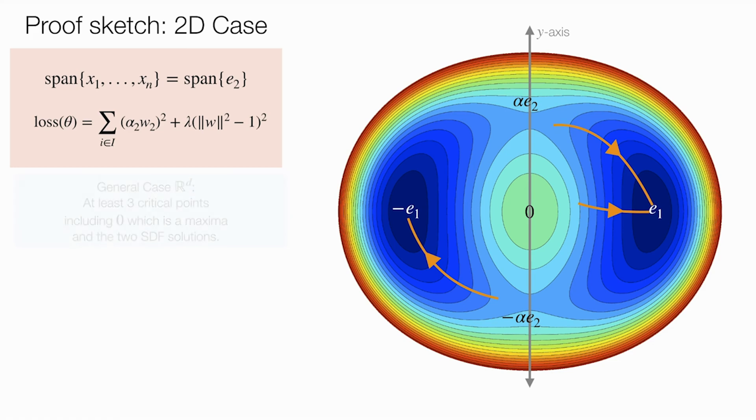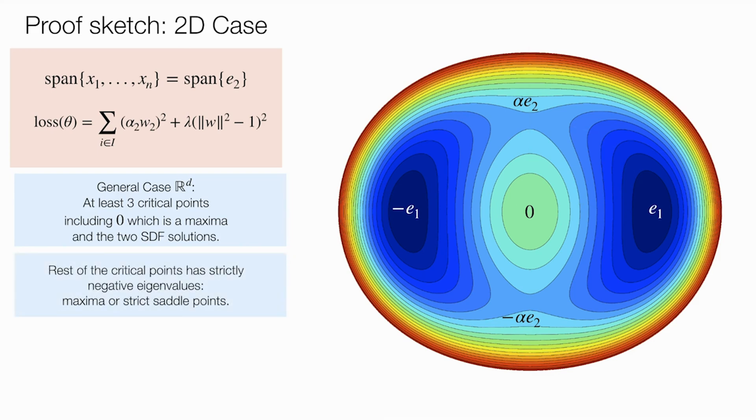For the general case, we show that there are at least three critical points, including zero, which is the maxima, and two SDF solutions. We show the rest of the critical points have strictly negative eigenvalue, those are either maximas or strict saddle points. A result by Li et al shows that gradient descent evades strict saddle points with probability one, which concludes our proof.